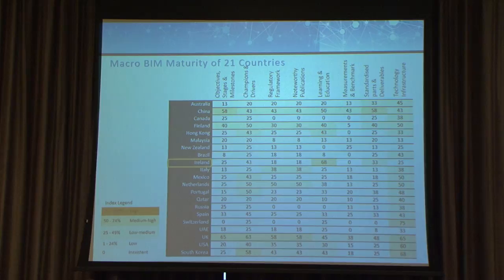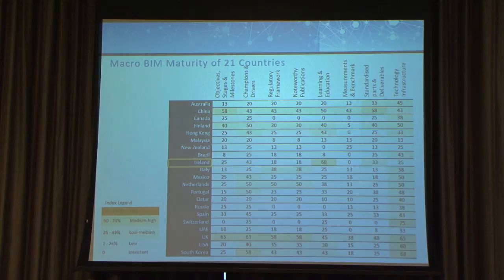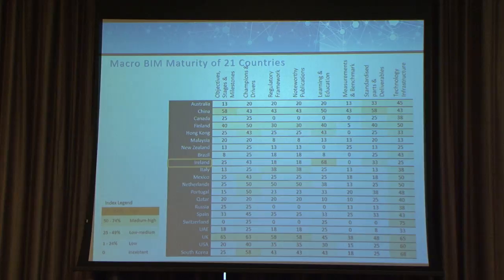If we color-code the results from white to dark orange, we can see that no single country leads across all components. The UK leads across the highest number of components — five. Ireland, for example, is leading in BIM education, with a high score across all 21 countries. This model is not just to create a world league table; we use it to promote learning from one country to another. If you want to learn about objective stages and milestones, you look to the UK.